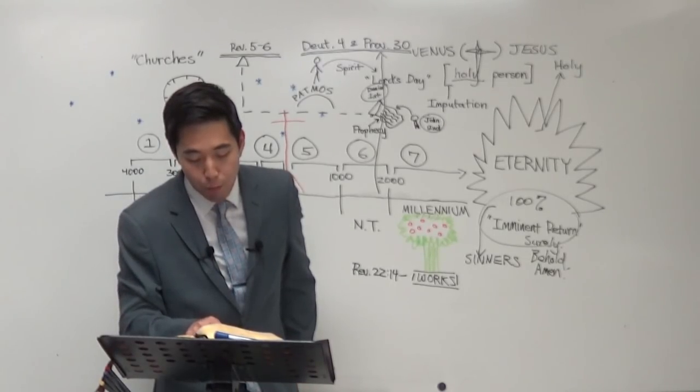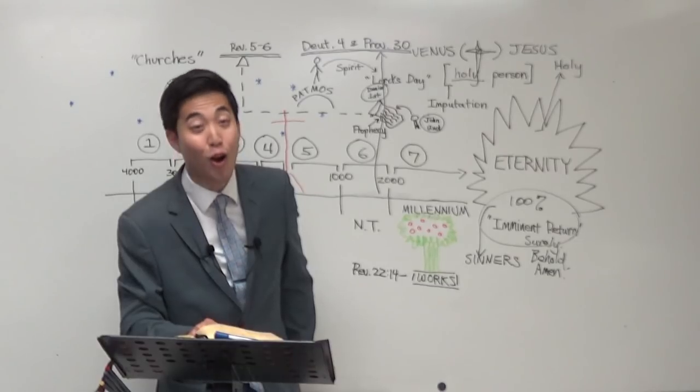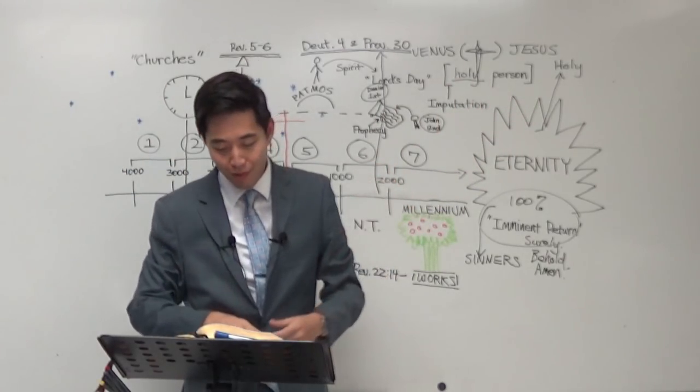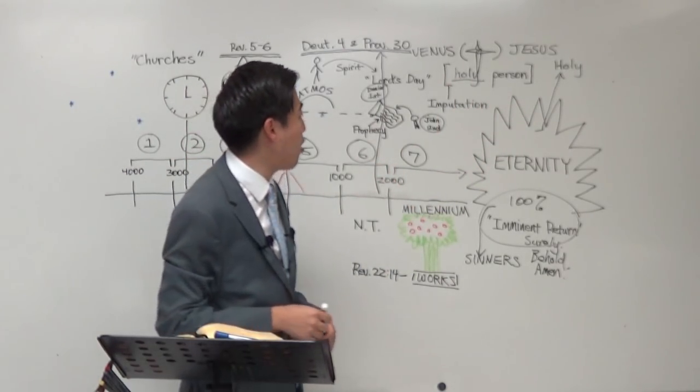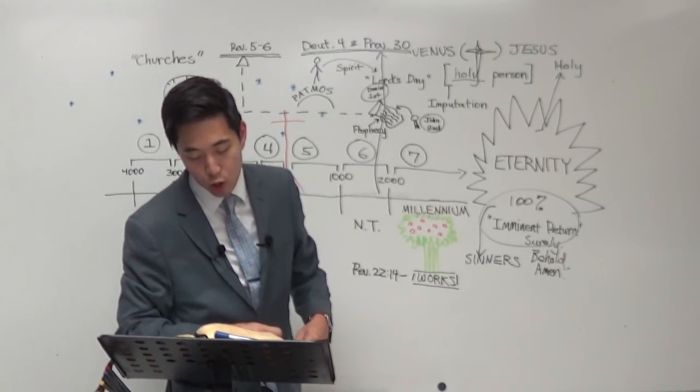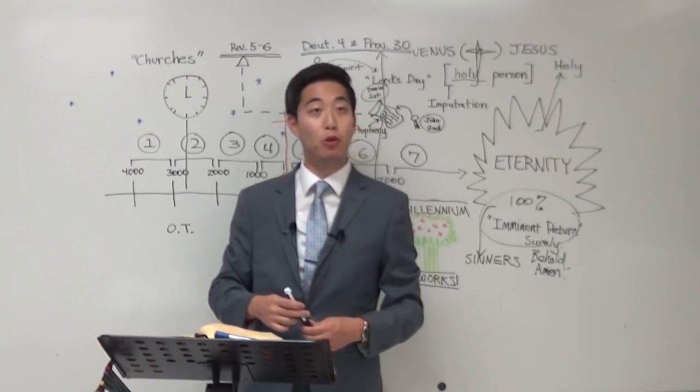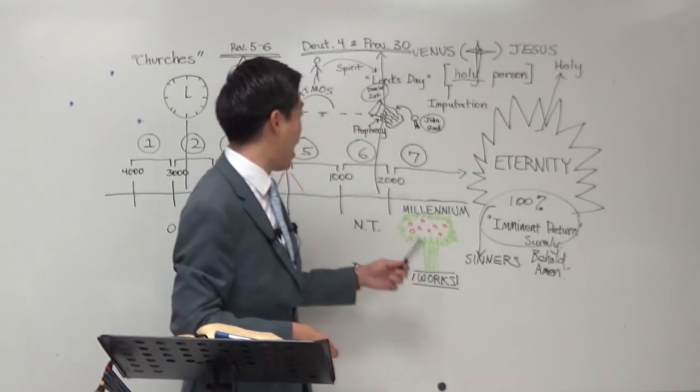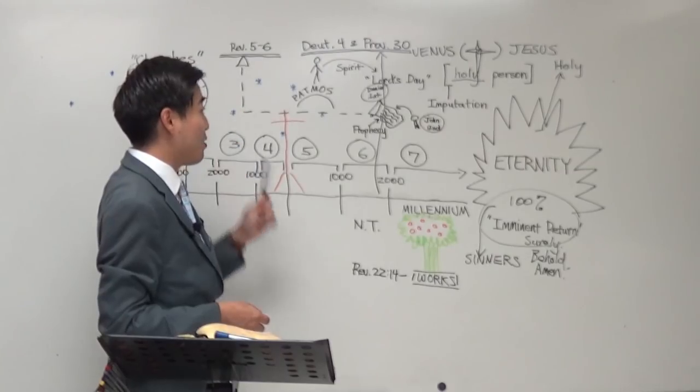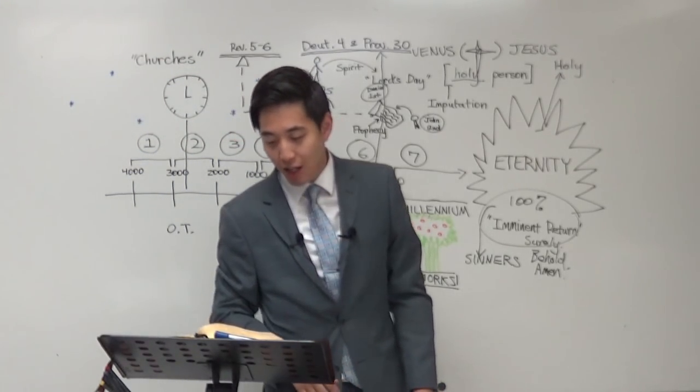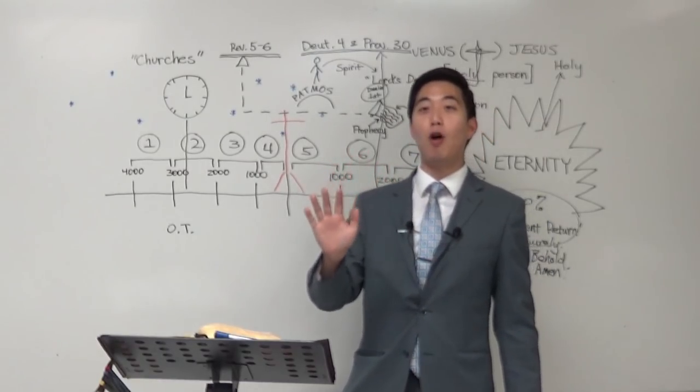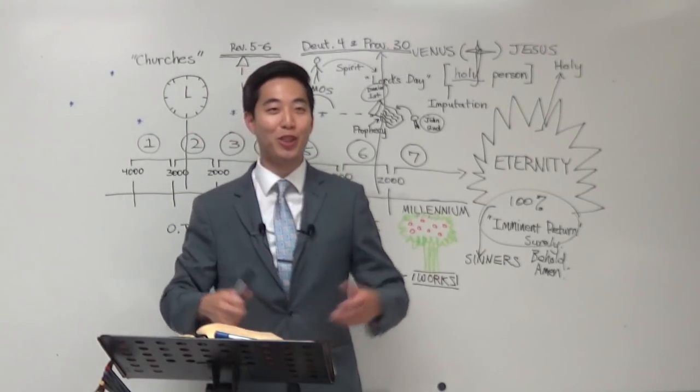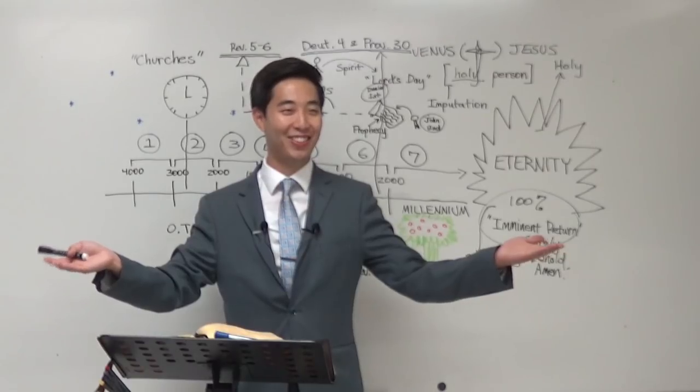That's why we respond this way at the last part of verse 20. Even so, come Lord Jesus. Let it be Lord. Come. Come Lord Jesus. That's the greatest prayer in your Bible and you want to mark down Revelation 22:20 as the greatest prayer that you want to pray in your Bible is even so, come Lord Jesus. So if you want the rapture to sound, you want to live in this happiness forever after, then pray, even so, come Lord Jesus.